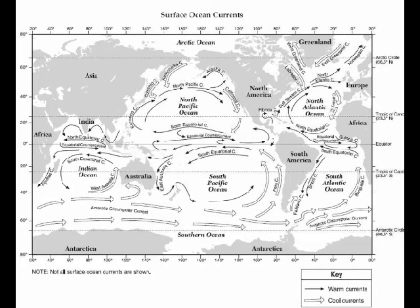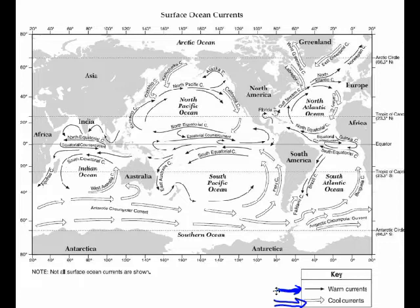These are generally blown around by the planetary winds that we saw on page 14 of the reference tables. You'll notice they split them up into two groups: the currents that are warm with a solid line, and the currents that are cool with a hollow line.